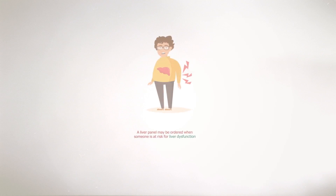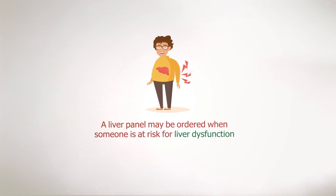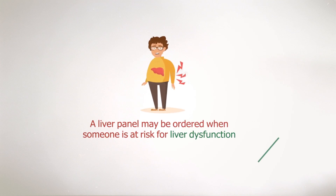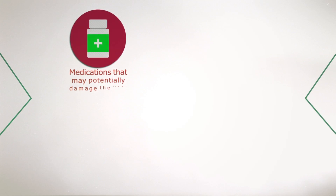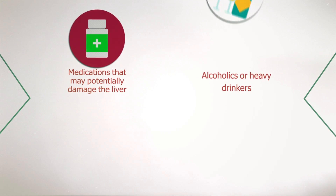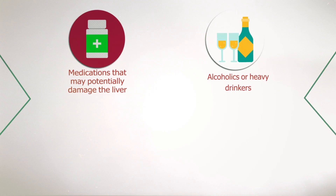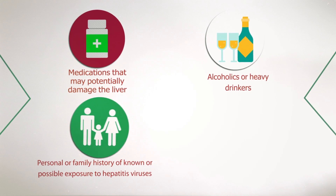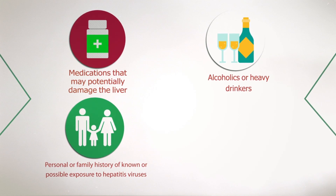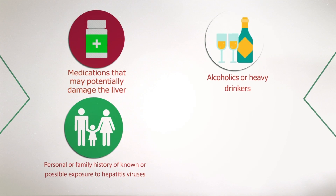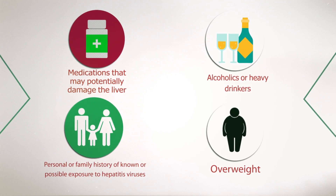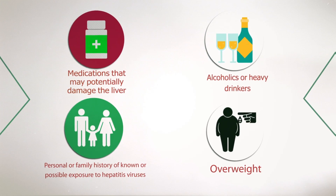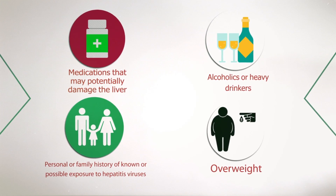A Liver Panel may be ordered when someone is at risk for liver dysfunction, including people who take medications that may potentially damage the liver, those who are alcoholics or heavy drinkers, those who have a personal or family history of known or possible exposure to hepatitis viruses, people who are overweight — especially if they have diabetes and/or high blood pressure.